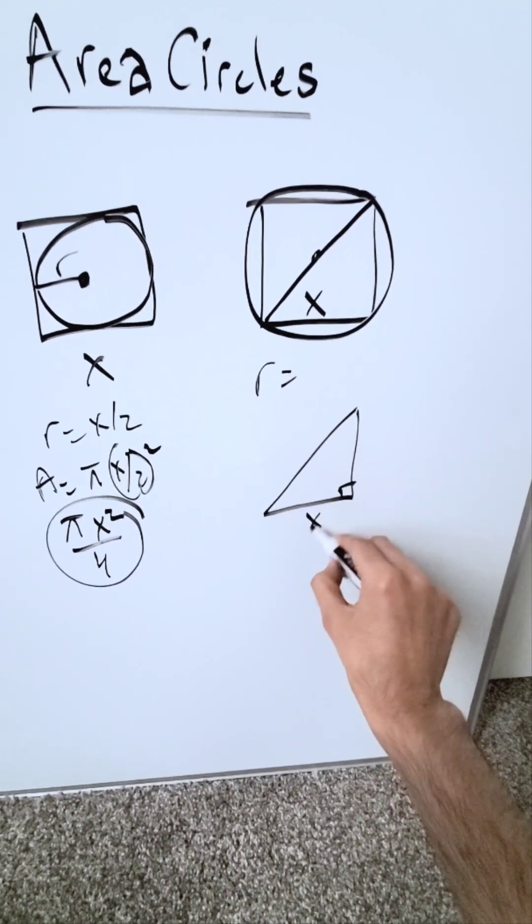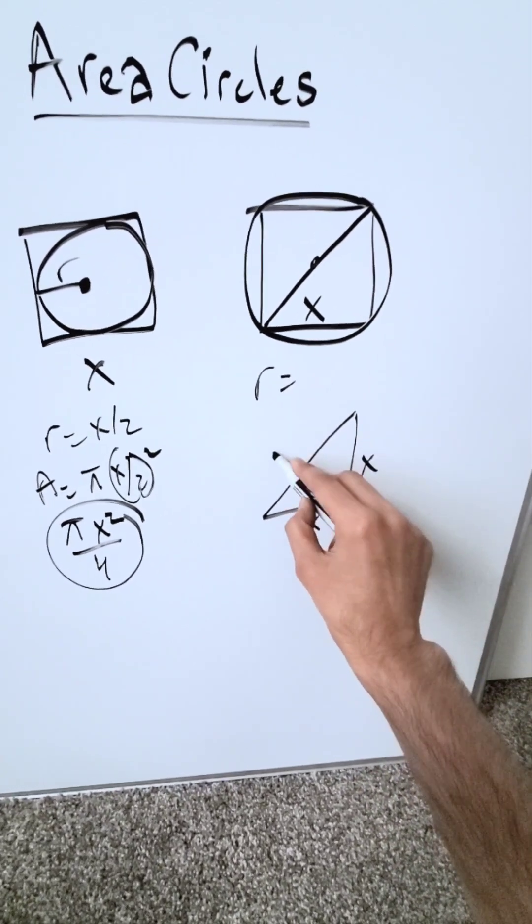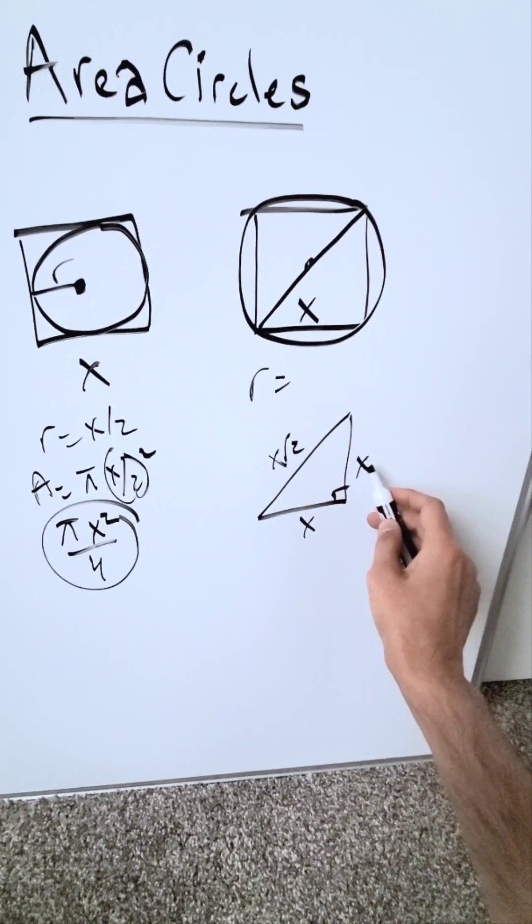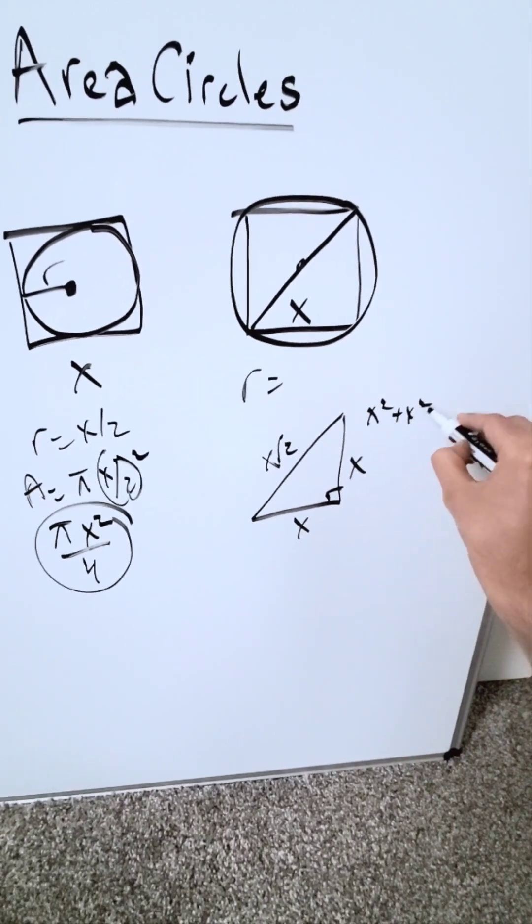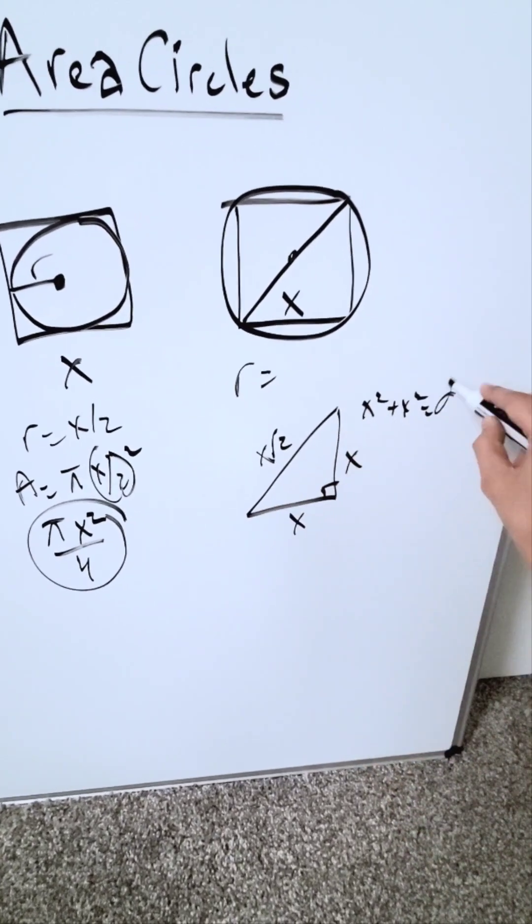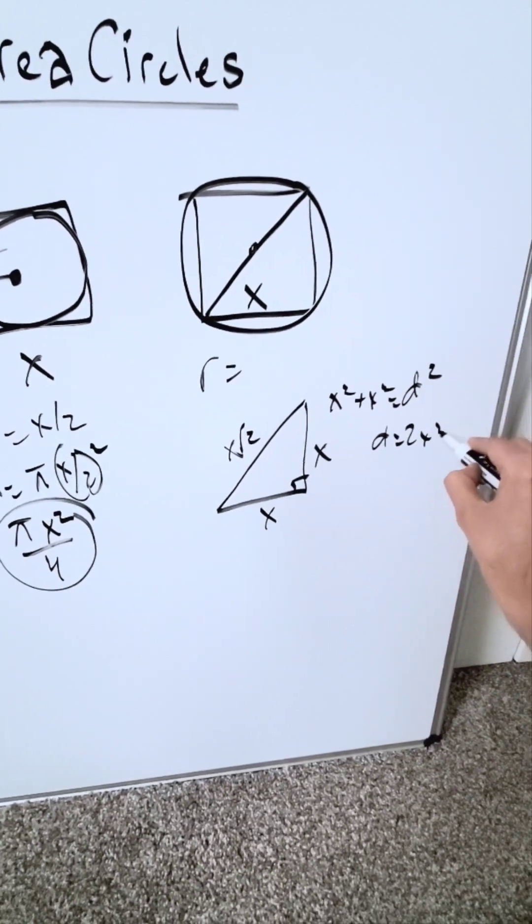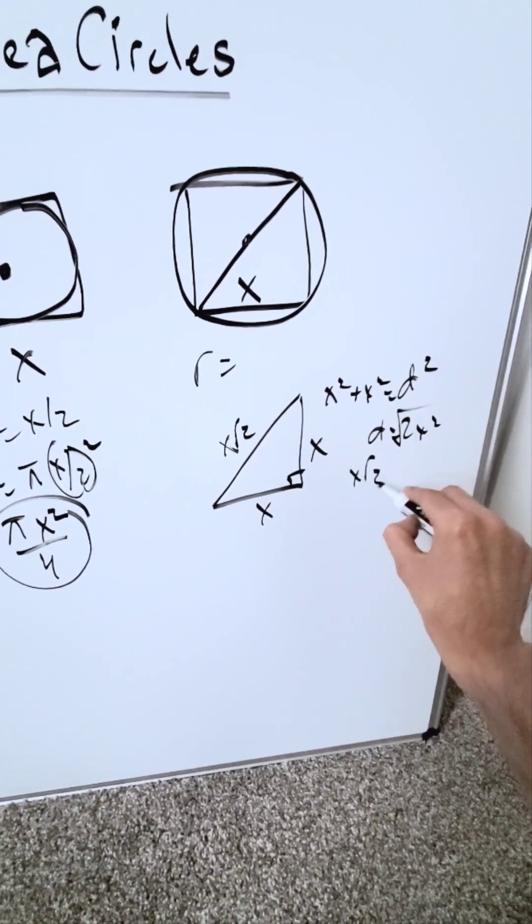Look here. You have your one side x, one side x, and the diagonal will be x√2. How would I do that? x² + x² equals that diagonal. I'm calling that d². I have d here is equal to √(2x²). You have x√2.